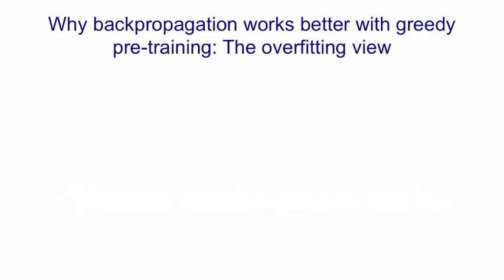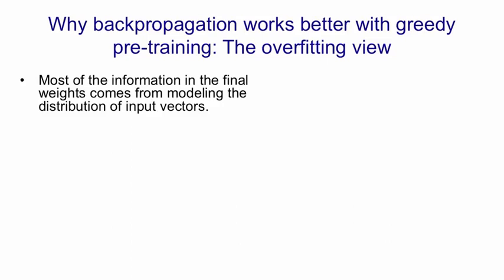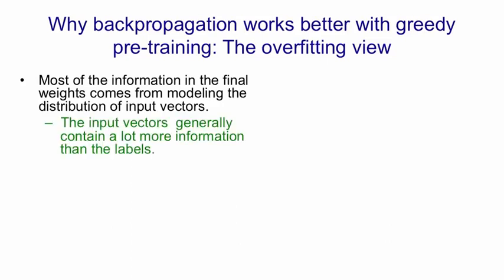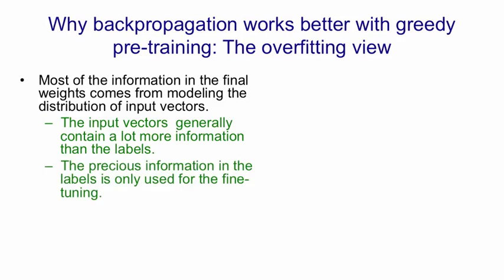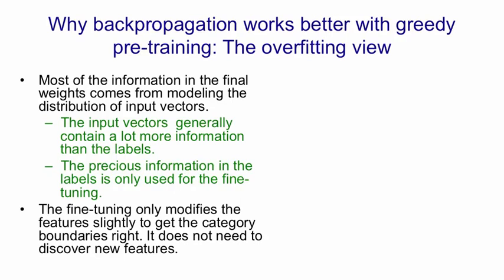In addition to being easier to optimize, pre-trained nets exhibit much less overfitting. That's because most of the information in the final weights comes from modeling the distribution of input vectors. These input vectors, if you're dealing with something like images, generally contain a lot more information than labels. A label typically only contains a few bits of information to constrain the mapping from input to output, whereas an image contains a lot of information which will constrain any generative model. The information in the labels is only used for the final fine-tuning, and because by that stage we've already decided on the feature detectors, we're not squandering that precious information designing feature detectors from scratch. The fine-tuning only makes slight changes to the feature detectors learned in the generative pre-training phase.